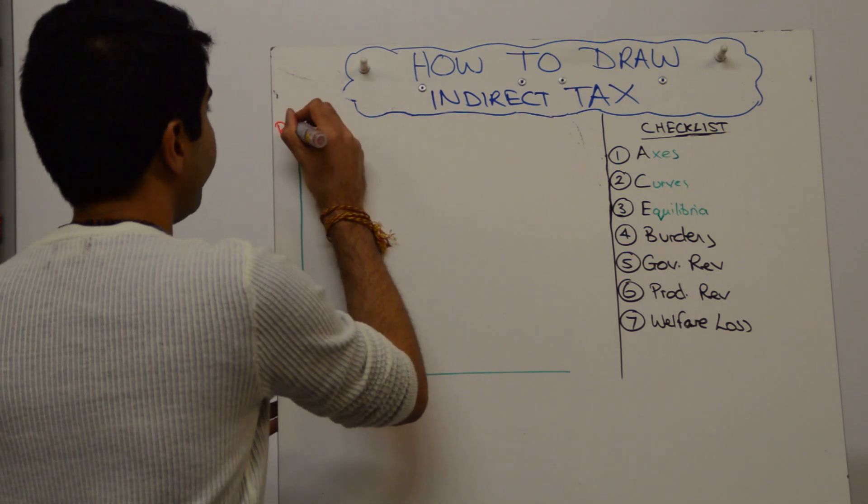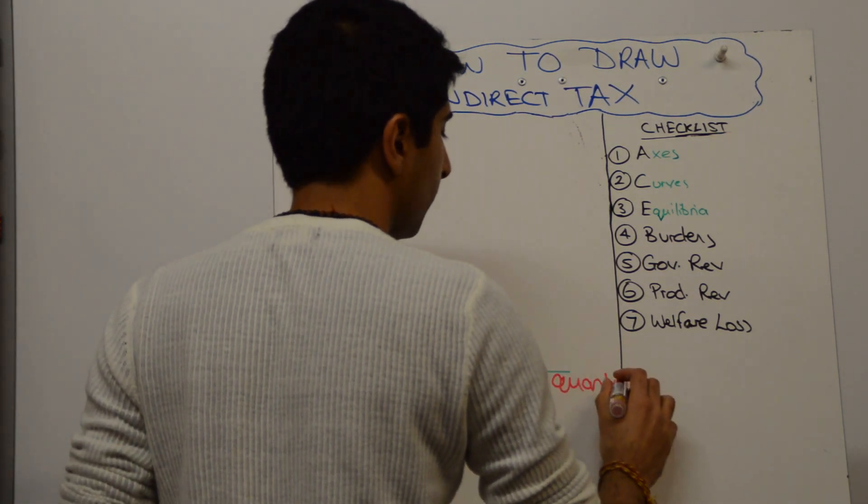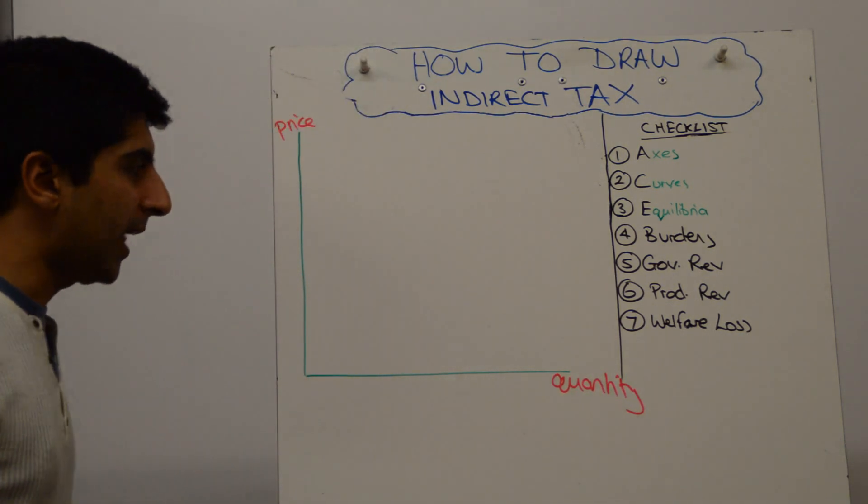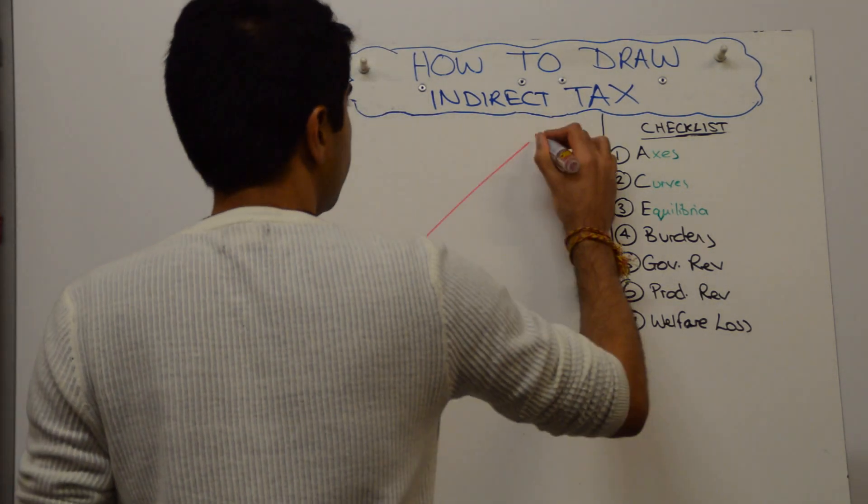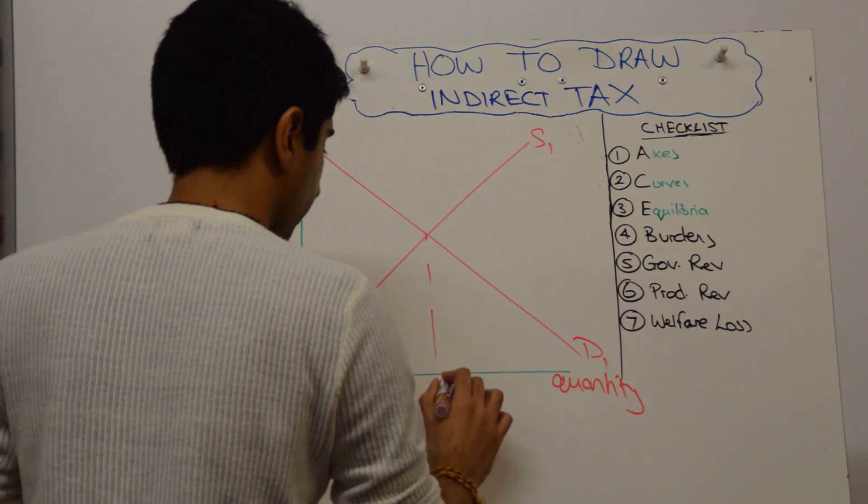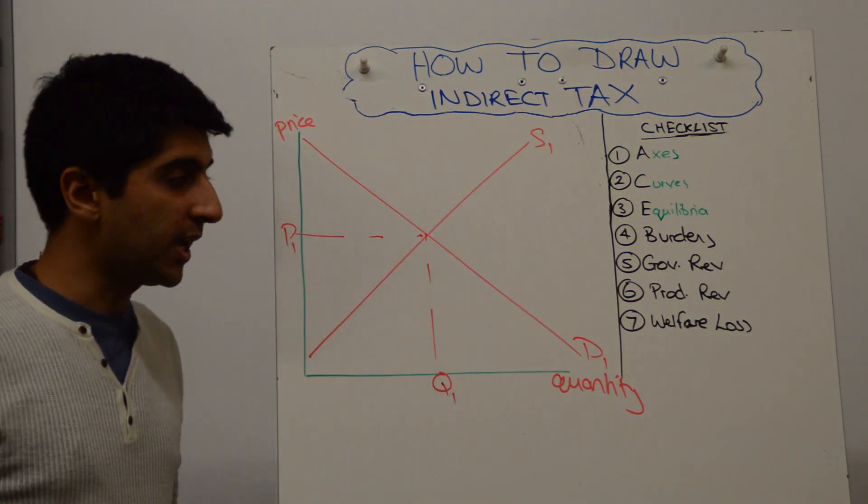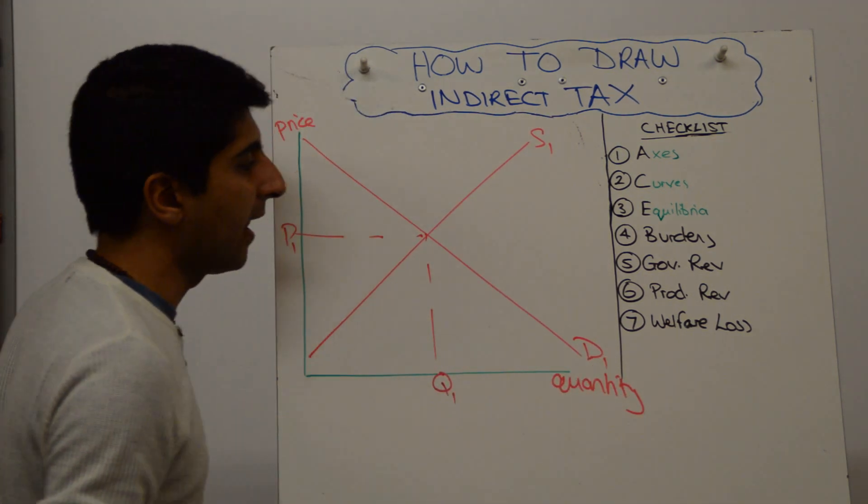We want to label our axes first. So price and quantity, keep it really simple. Next, draw your simple demand and supply, and label your equilibrium. You see how I'm labeling as I go along? Very important technique. Never leave anything right to the end.